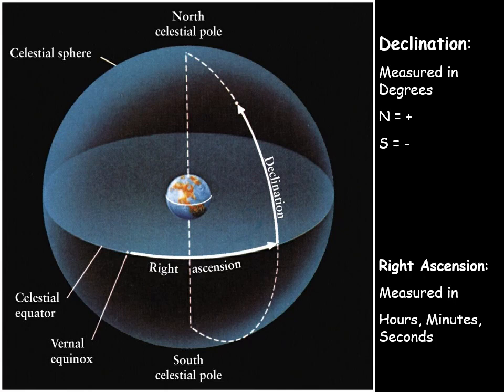So why does the world today use the British way? Because the British Navy ruled the seas, so we do things the British way. This is the essence of how right ascension and declination came about, why they are the way they are, and how they relate to navigation and latitude and longitude on Earth.